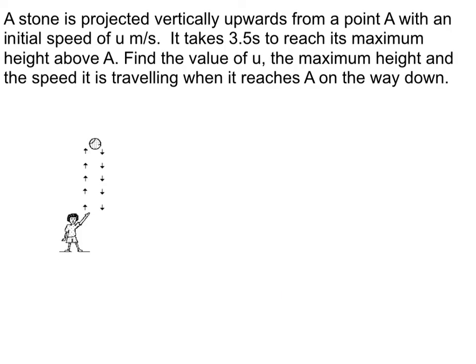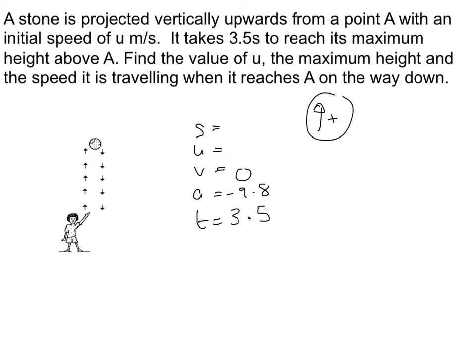Let's set up our SUVAT. I'm going to take up to be positive, which means acceleration is minus 9.8. The initial speed is U, and it takes 3.5 seconds to reach its maximum height. I want to find U first, so I choose the equation without S, which is V equals U plus AT. Substituting gives U equals 34.3 metres per second.